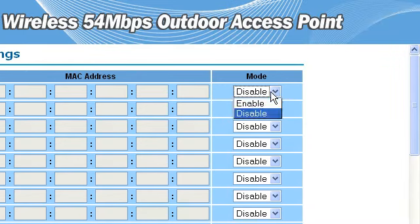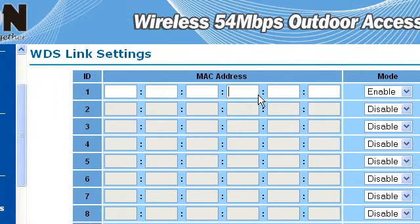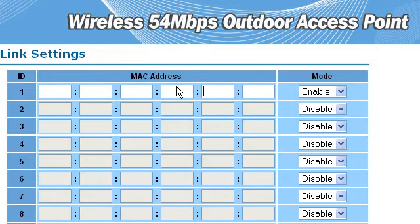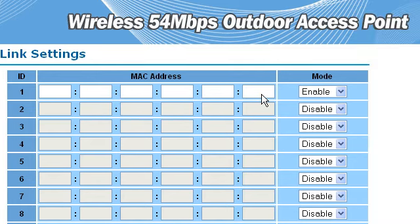You have to check this one — Enable — and input the MAC address of your branch office. Please double-check the MAC address. You can see it at the back of the antenna. Same thing with the branch office: you have to select bridge mode, then input the MAC address of the main office.